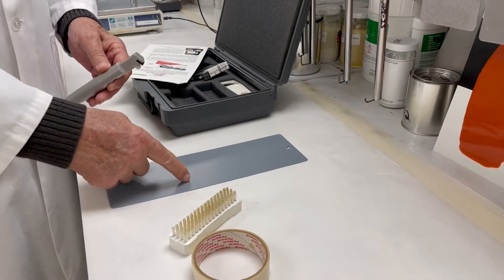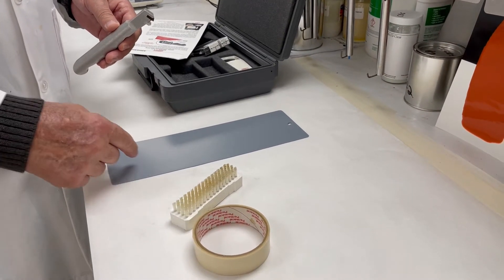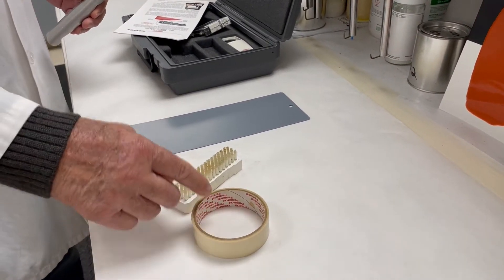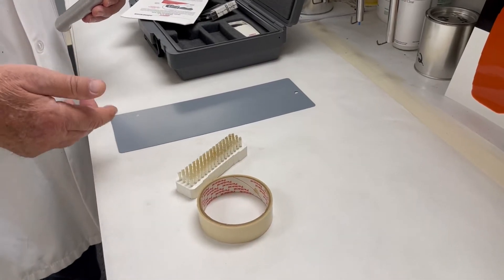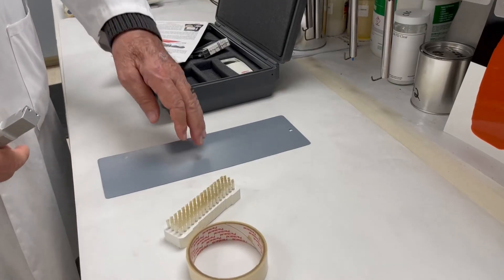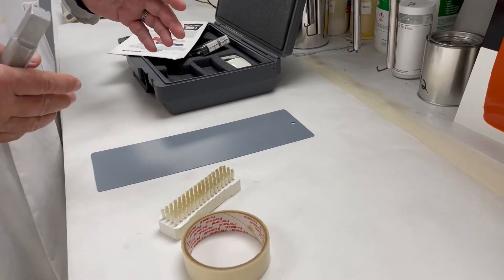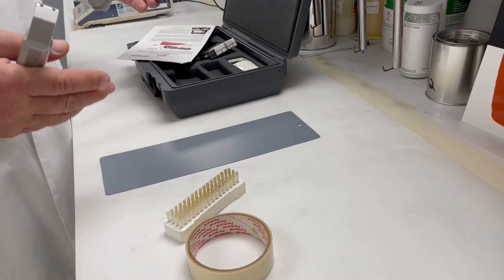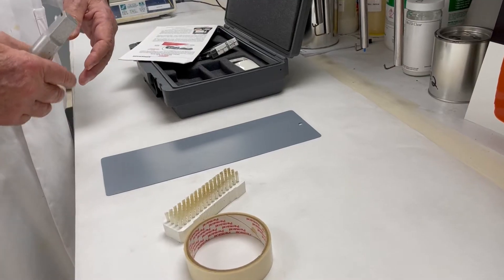You're going to make perpendicular cuts on your substrate. Then you put the tape on there, pull the tape off, and what you're looking for is the cuts will make like a graph paper design. You're going to count how many squares you pull off.